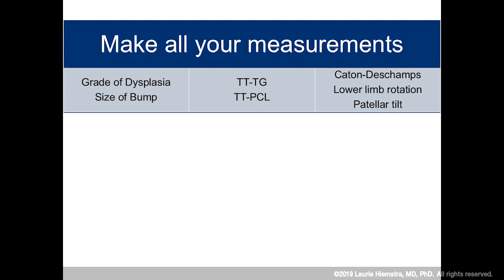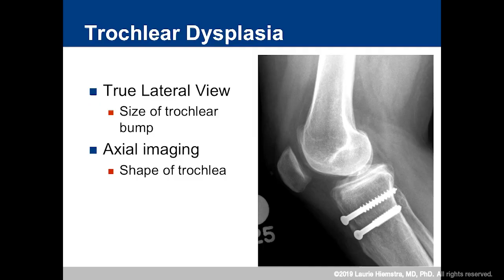What we need to know: do they have trochlear dysplasia and how bad is it? We want to know the size of that trochlear bump. We want to know any coronal plane malalignment, so we need to know their TTTG, but we also need to know their TT-PCL. We want to know about patella alta — I use the Caton-Deschamps, but you can use whichever measurement scheme you prefer. We also need to know about lower limb rotation and any tilt.